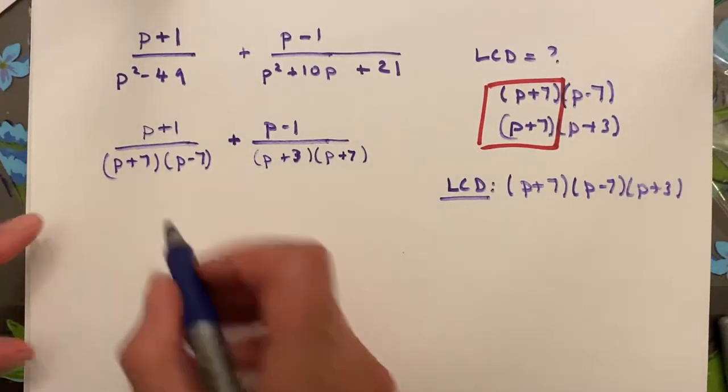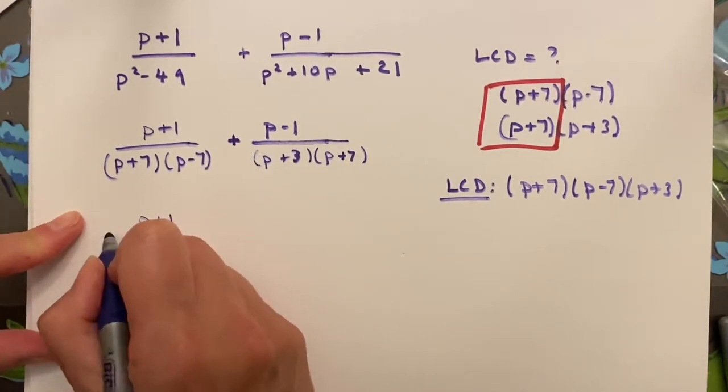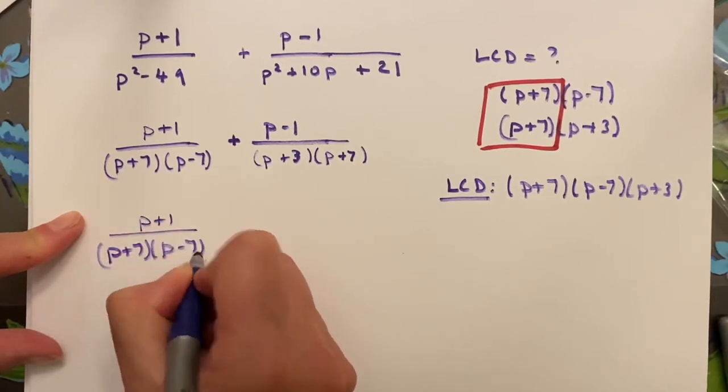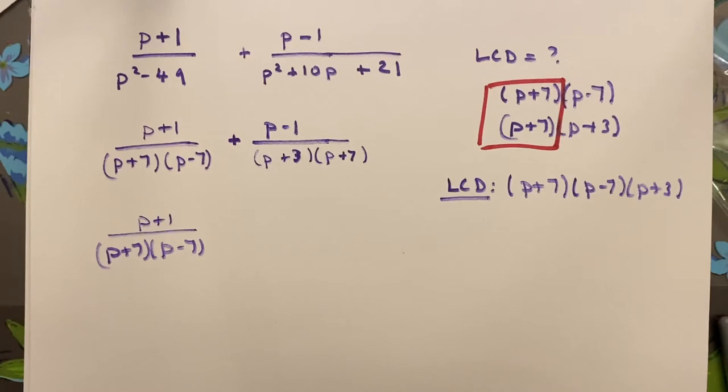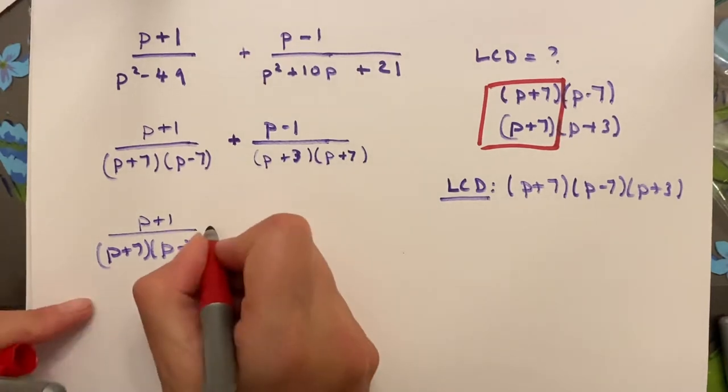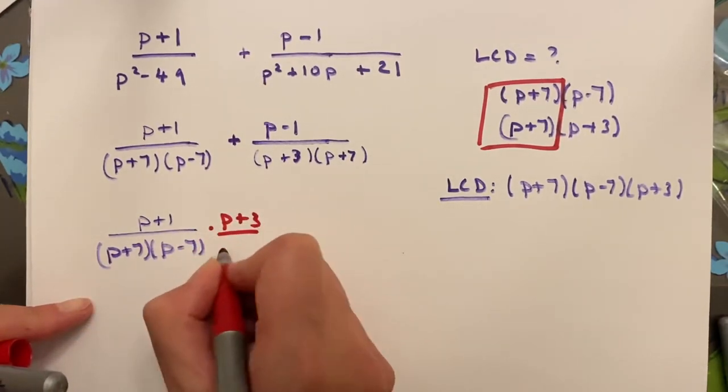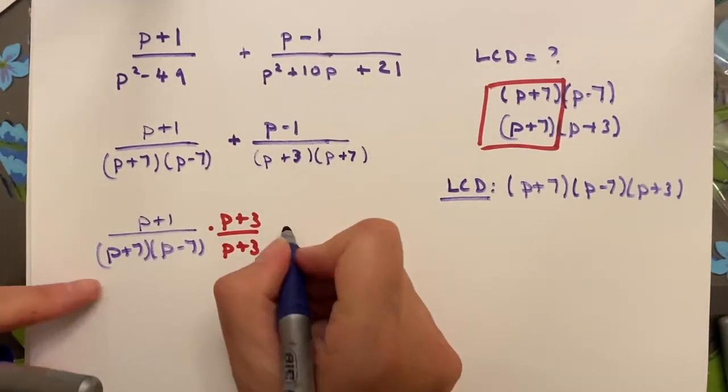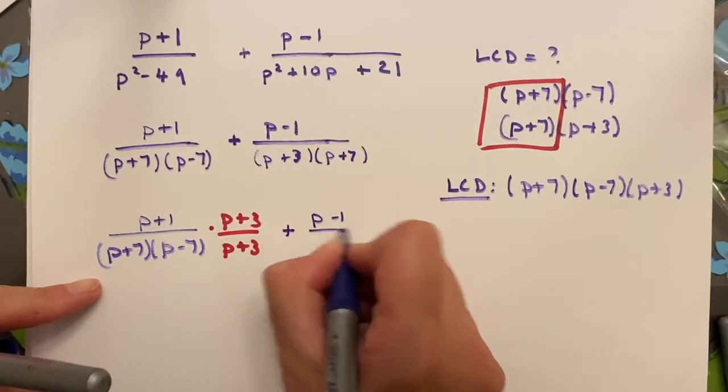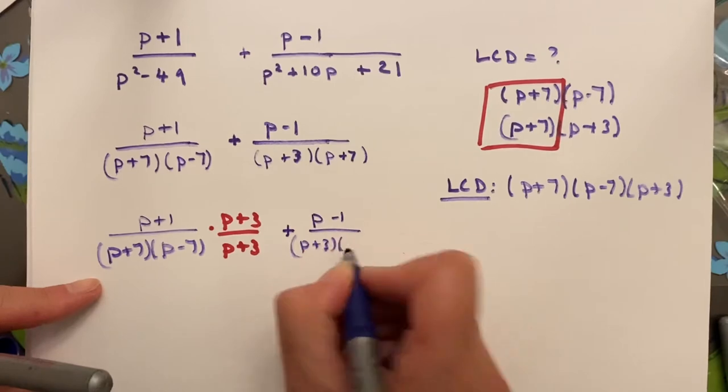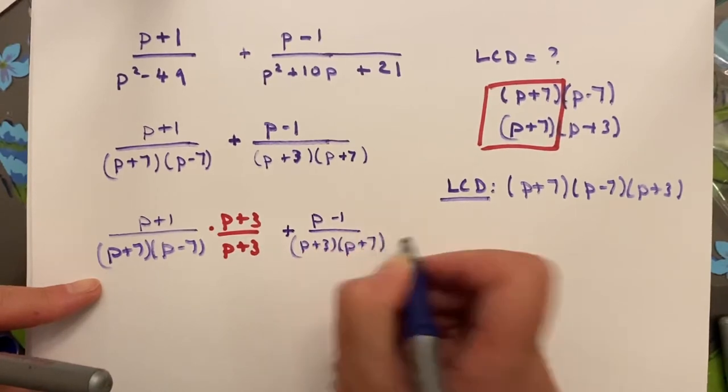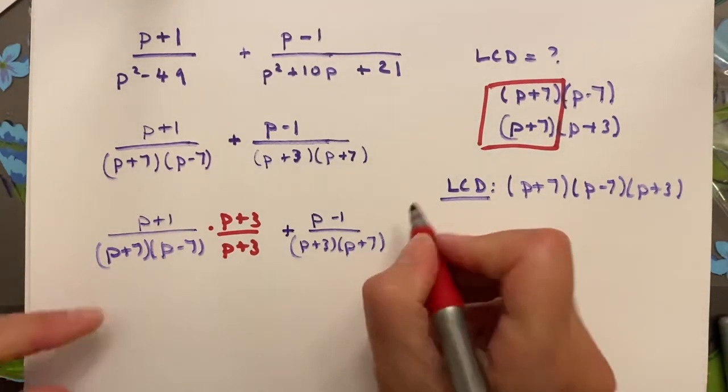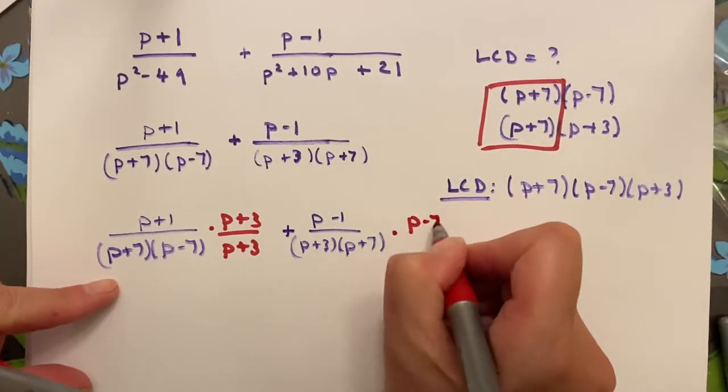How do I get there? Well, p plus 1 over p plus 7, p minus 7. What am I missing? I'm missing the p plus 3. So I'm going to add it top and bottom. And then I go over to this term, and I have p minus 1 over p plus 3 and p plus 7. Which one am I missing? I'm missing p minus 7. So I multiply top and bottom by p minus 7.